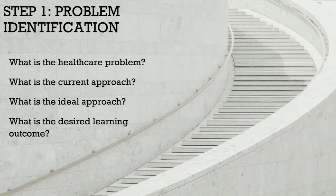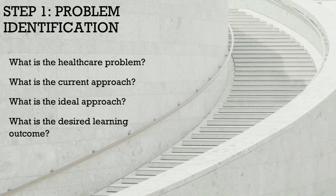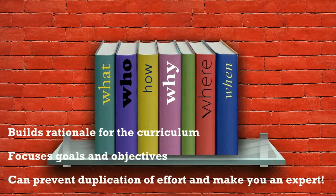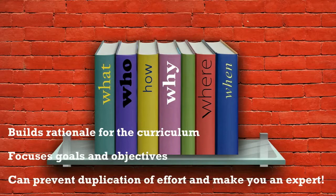What would our ideal approach be? Ideally our residents would manage strokes directly, but being a comprehensive stroke center, that's not possible. Maybe they can rotate on the service, or can we do a simulation? There are a lot of different ways to think about the ideal approach. Our desired outcome would be that our emergency residents can manage ischemic strokes independently as practitioners when they leave our program. This first step helps build your rationale for devoting time and resources to your educational program. It also involves a literature search — if there's already a great TBL on ischemic stroke management, you can use it and avoid duplicating efforts, or expand on it.